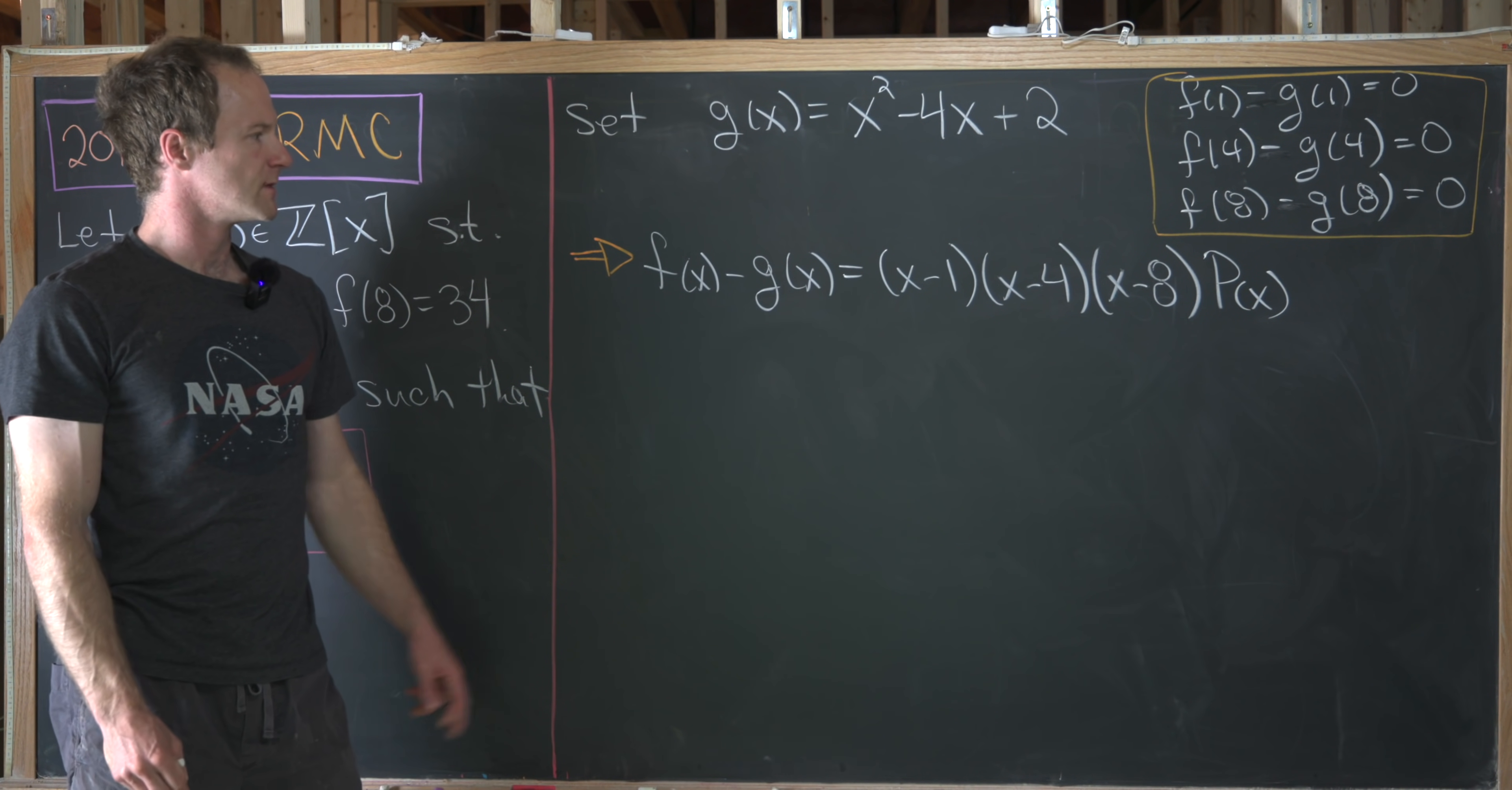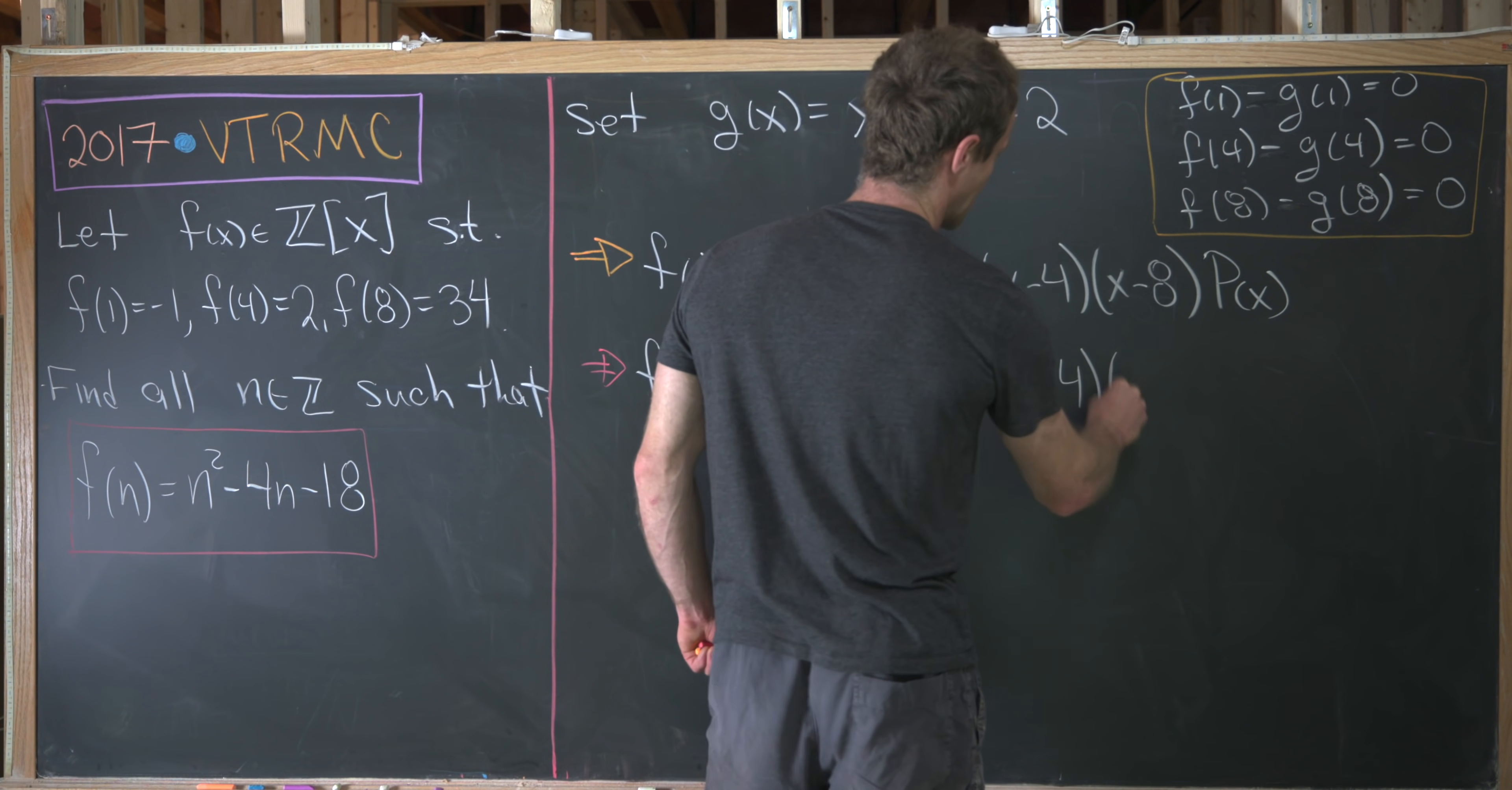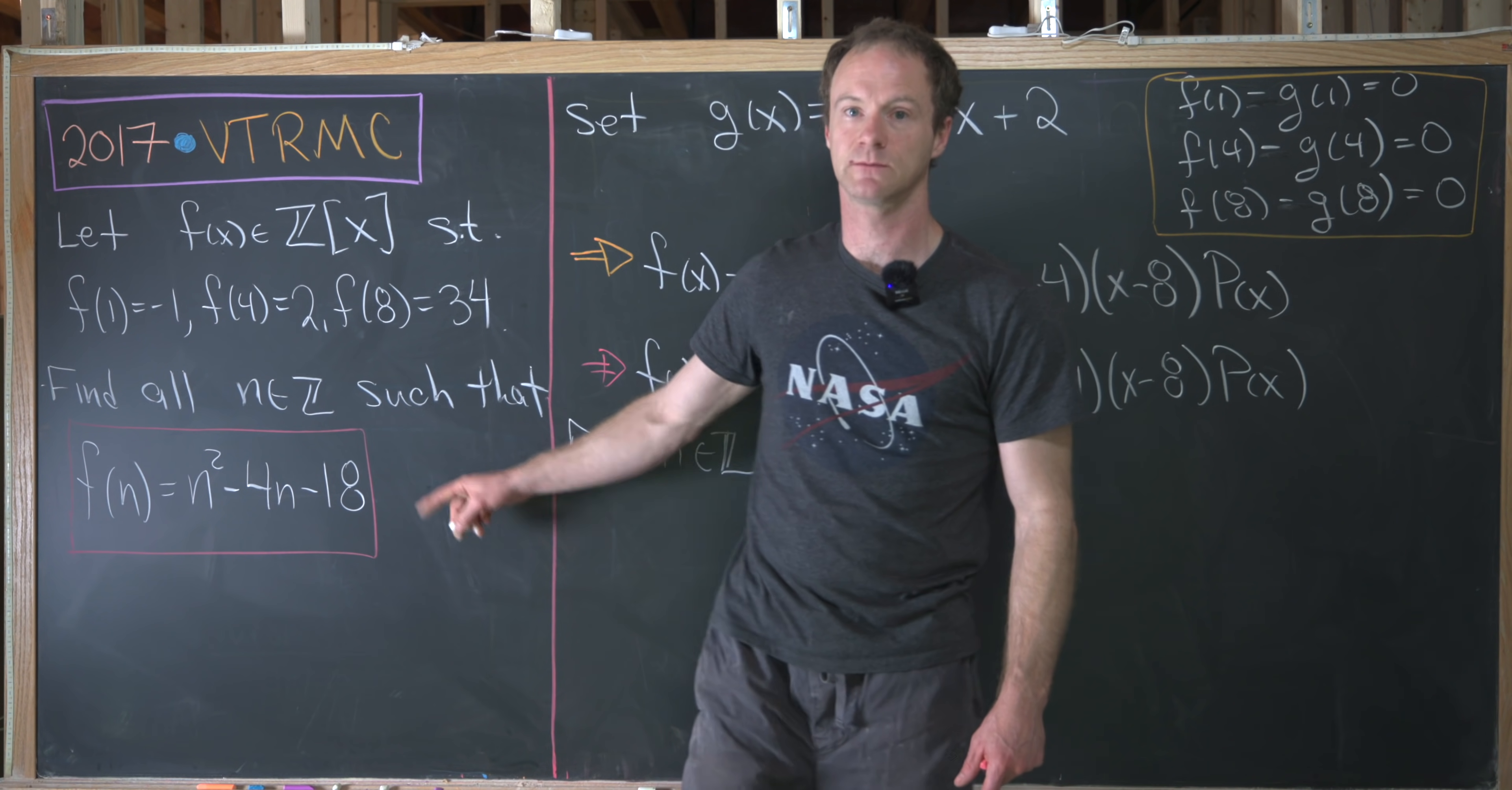Now what can we do? Well, now what we would like to maybe do is solve this for f of x. So that's fairly quick. We can say that now f of x is equal to, maybe I'll write it as g of x plus (x minus 1)(x minus 4)(x minus 8) times p of x. I just noticed that should be plus when I move the g of x over.